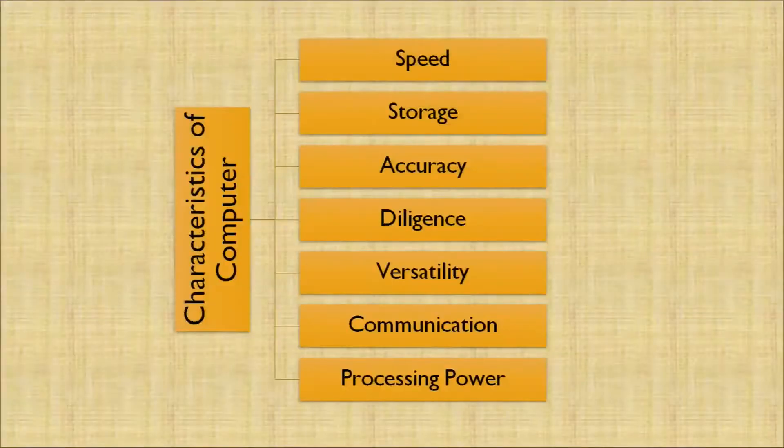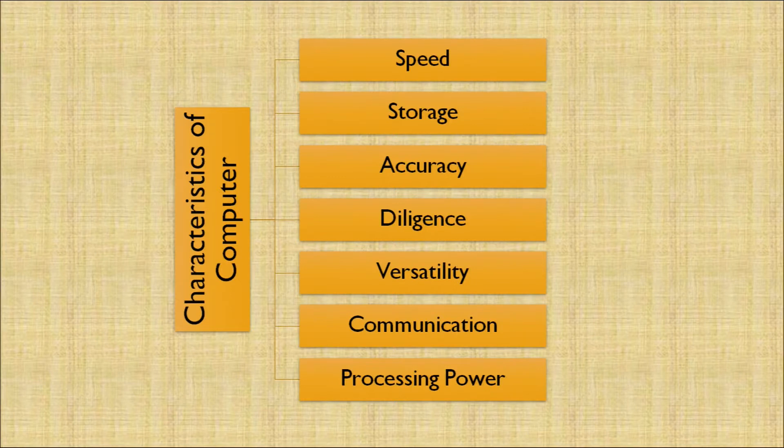There are seven characteristics of a computer: speed, storage, accuracy, diligence, versatility, communication, and processing power. Speed — the accounting entries being processed through the computer are processed very quickly. That's how speed helps us with respect to passing an accounting entry. Second is storage — the computer can store data in the hard disk, so after years of passing accounting entries we can use that stored data whenever it is required.